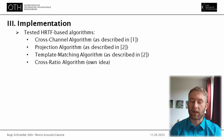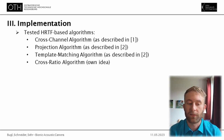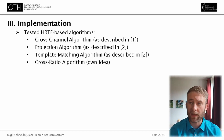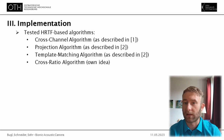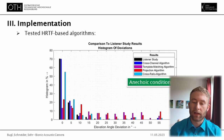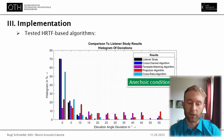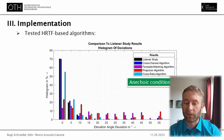With these HRTF datasets we tested four algorithms: the cross-channel algorithm, a projection algorithm, a template matching algorithm, and my own suggestion, a cross-ratio algorithm. As we needed something to compare against, we conducted a small study with 10 subjects to determine how well humans could localize sound in the elevation direction with a similar task. Plotting the results for anechoic conditions, we can see that the cross-channel algorithm performs almost exactly as well as human spatial hearing, closely followed by the cross-ratio algorithm, with the other two algorithms clearly outperformed.